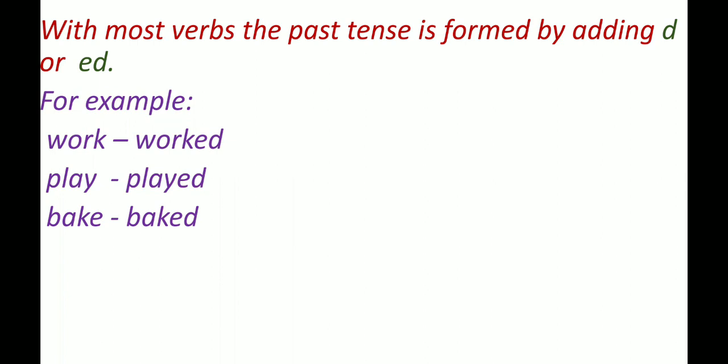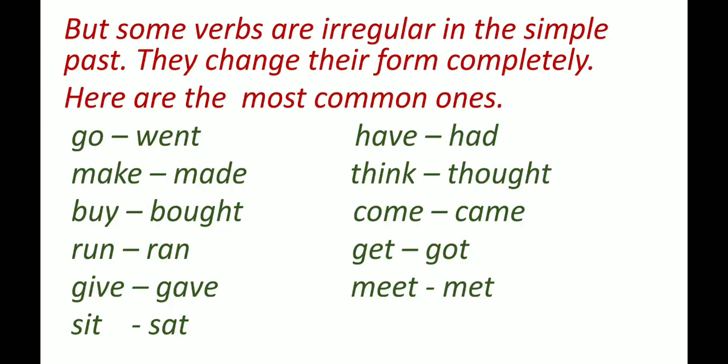With most verbs, the past tense is formed by adding -d or -ed. For example: work → worked, play → played, bake → baked. But some verbs are irregular in the simple past — they change their form completely. Here are the most common ones.